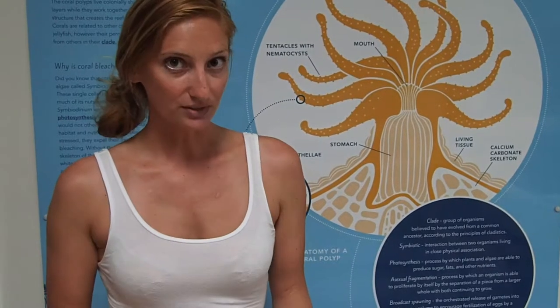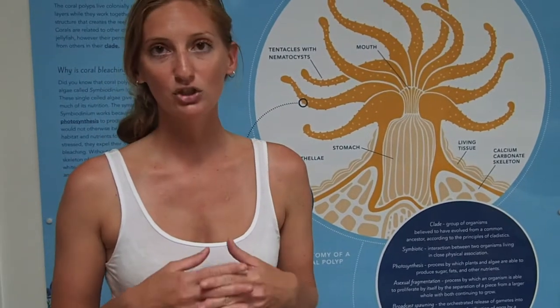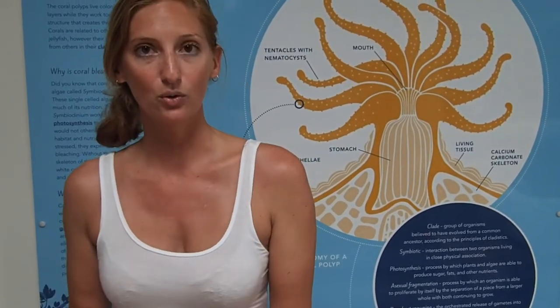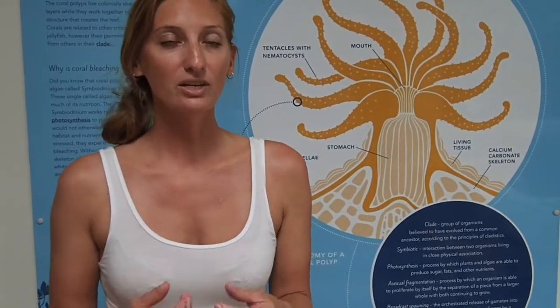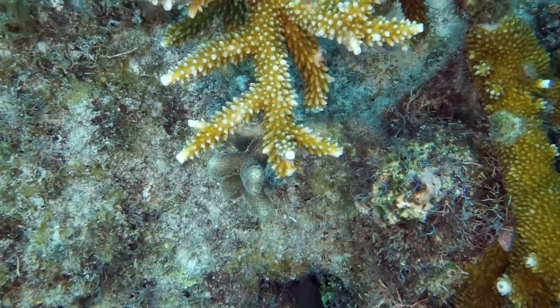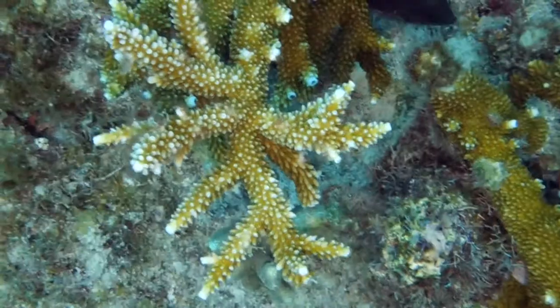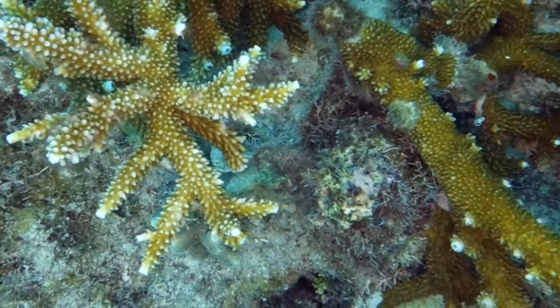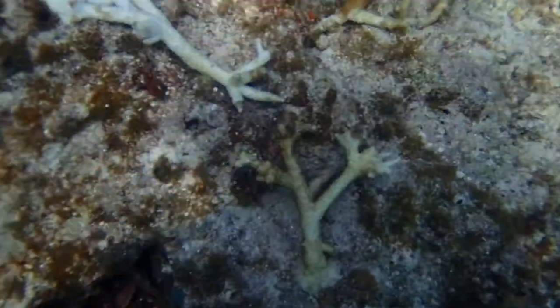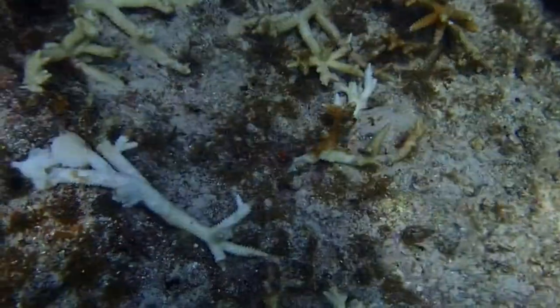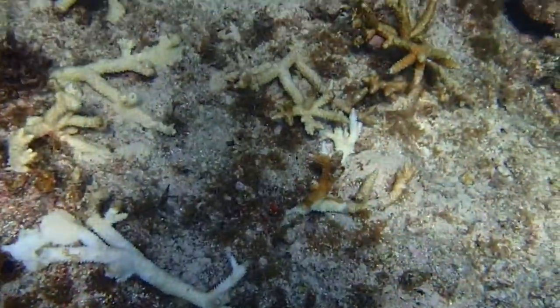In times of stress, this relationship breaks down. There's a lot of argument as to whether the coral kicks the algae out or whether they leave of their own accord. But whatever the case, the coral loses the orange, yellow, brown, gold kind of pigmentation that the symbionts give to the coral. When that happens, all you see is the white skeleton of the coral below. And that's called bleaching.